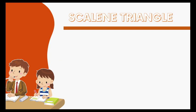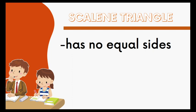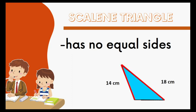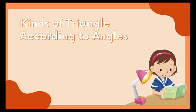The next one is the scalene triangle. A scalene triangle has no equal sides. This is an example of a scalene triangle. The measurement of the first side is 14 cm, the second side is 18 cm, and the third side is 8 cm. As you can see, there are no equal sides. Therefore, this is a scalene triangle. Let us go to the kinds of triangle according to angles.